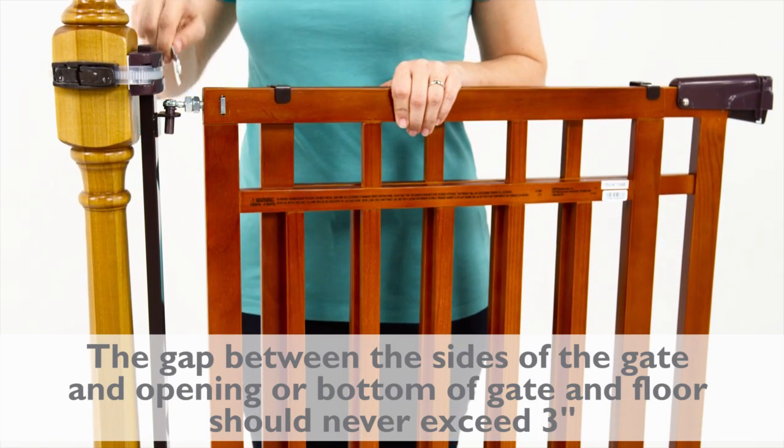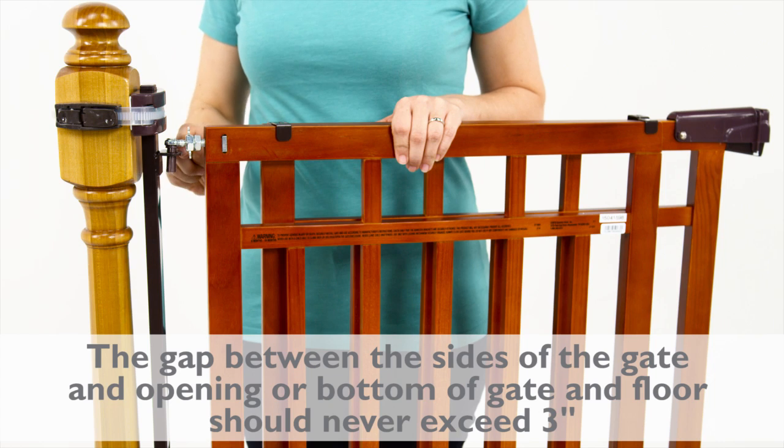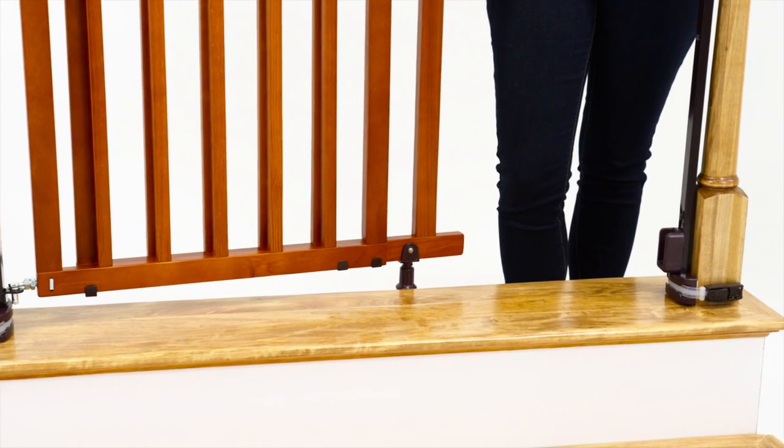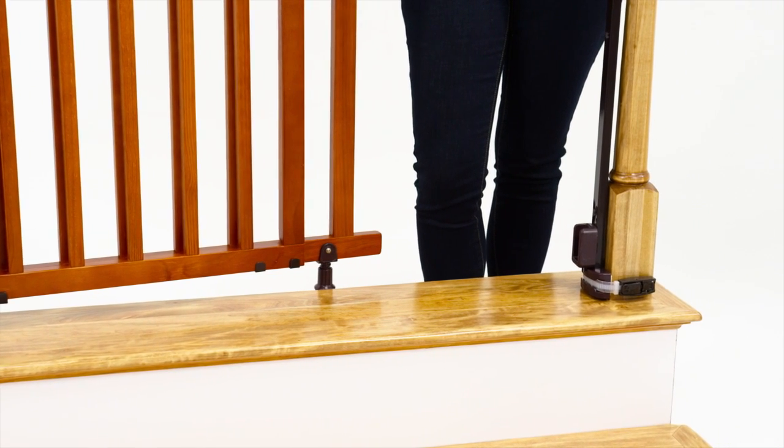To maximize the gate width, adjust your hinge bolts all the way out. To install the catch side support, repeat the steps for the hinge side support according to your banister type or wall.